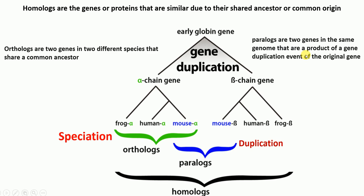Paralogs are two genes in the same species that have a common ancestor and arise because of gene duplication events, whereas orthologs are two genes in different species — such as the alpha gene in frog and the alpha gene in human — that occur due to speciation. Both paralogs and orthologs fall under homologs.